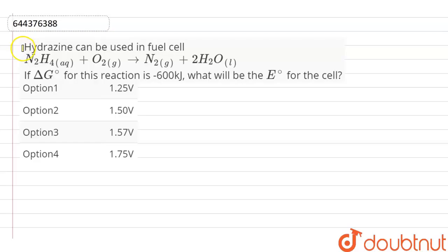Here is a question in which hydrazine can be used in fuel cell. The reaction is N2H4 aqueous plus O2 gaseous converted into nitrogen gaseous plus 2 moles of water in liquid form. If delta G0 for this reaction is minus 600 kJ, what will be the E0 for this cell?